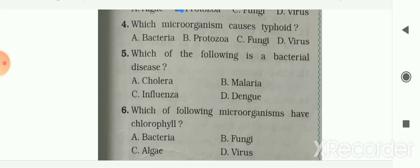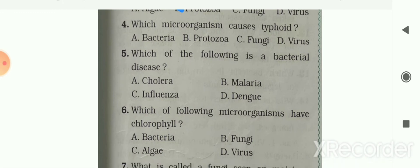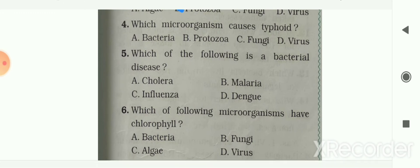Next question: which microorganism causes typhoid? Options are bacteria, protozoa, fungi, and virus. Your answer is option A — bacteria. Bacteria causes typhoid.